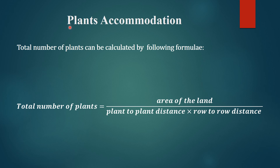If intercropping is adapted, then this space can be utilized for generating additional income to compensate the loss. The total number of plants can be calculated by this formula: area of the land divided by plant-to-plant distance multiplied by row-to-row distance.